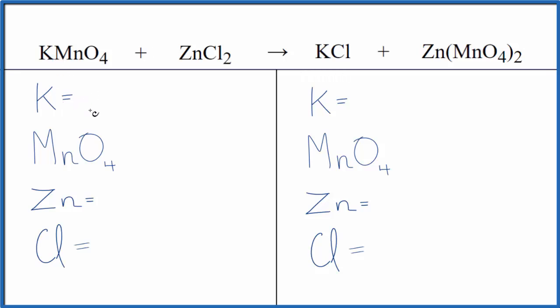We have one potassium atom and then this MnO4, this is the permanganate ion. We have it here and we have it here, so we have this on both sides. This is a polyatomic ion. We're going to count it as one thing. So we have one of these permanganate ions.